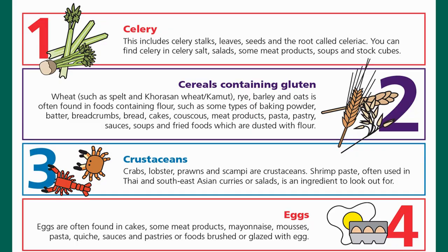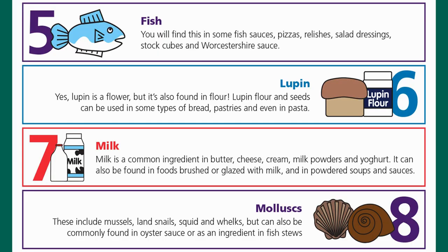The 14 allergens and where they can be found: (1) Celery — including stalks, leaves, seeds, and celeriac root, found in celery salt, salads, some meat products, soups and stock. (2) Cereals containing gluten — wheat including spelt, khorasan/kamut, rye, barley, and oats — often found in flour-containing foods like bread, cakes, pasta, pastry, sauces, soups, and fried foods dusted with flour. (3) Crustaceans — crabs, lobsters, prawns, scampi — and shrimp paste used in Thai and Southeast Asian curries or salads.